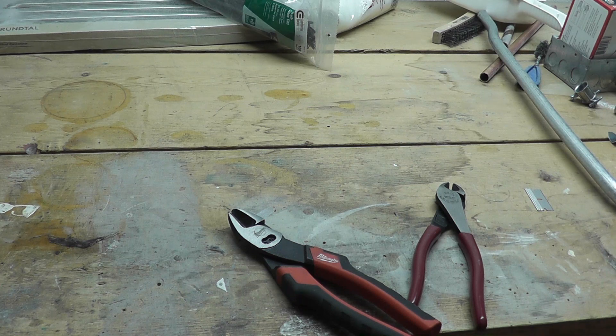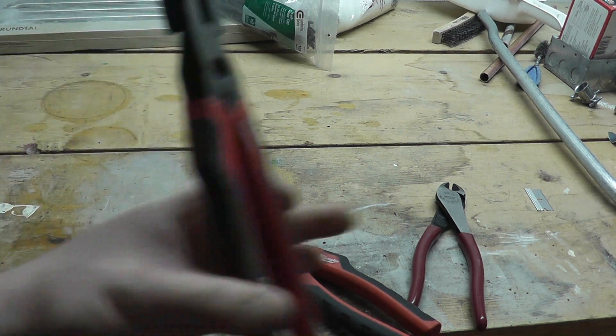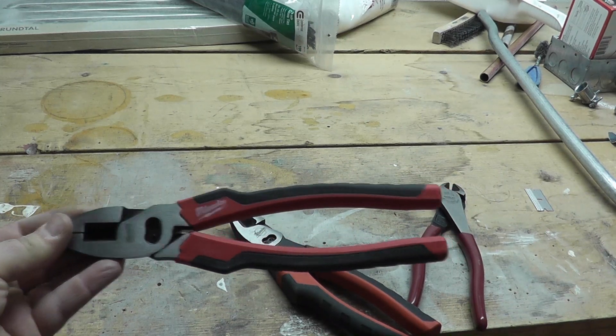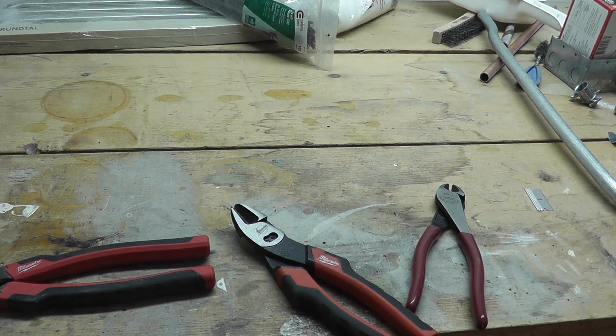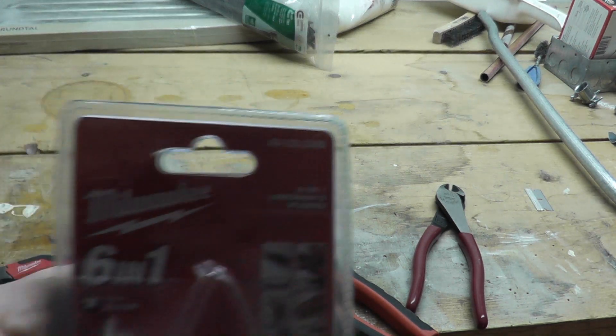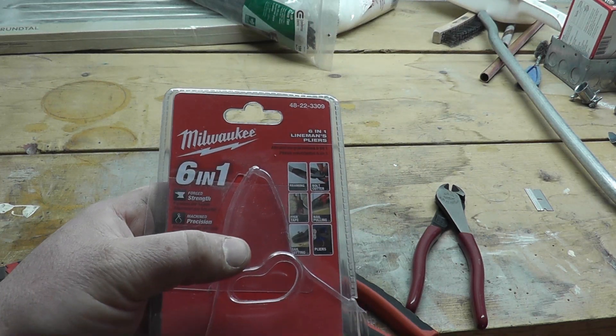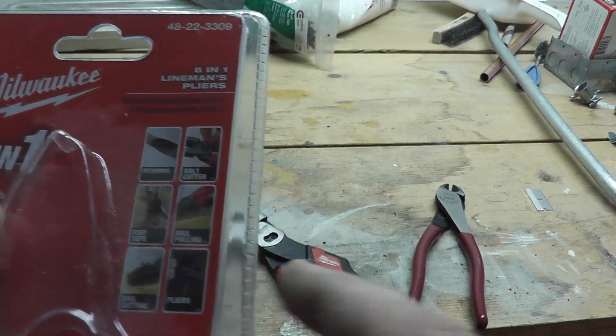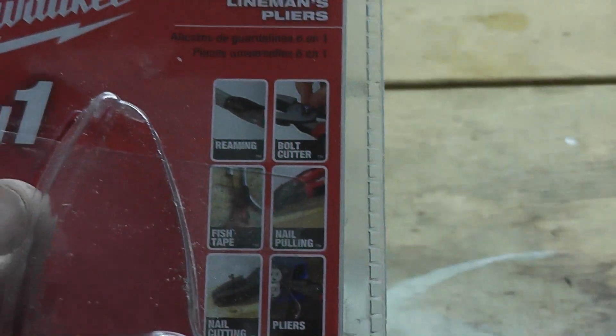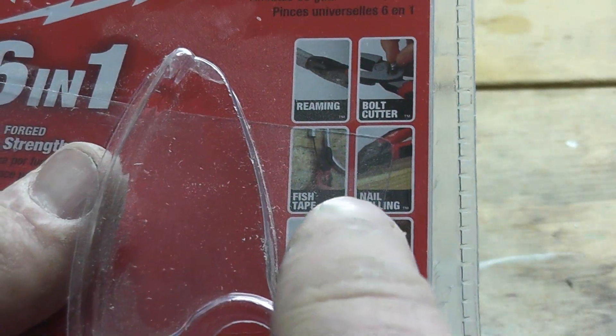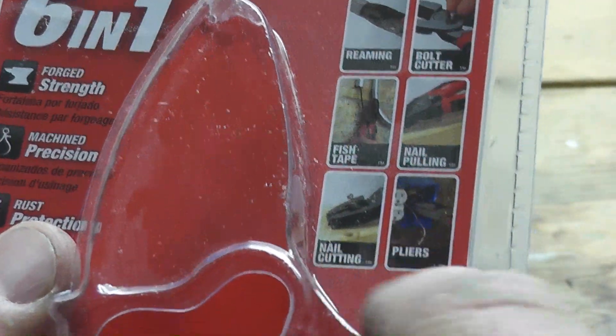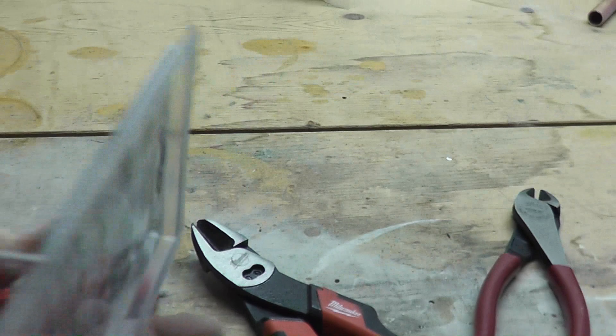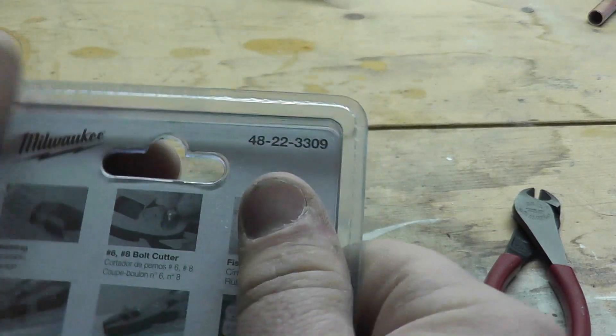On the other hand, I also picked up a pair of their lineman's pliers. Now these also are billed as six-in-one. Can you see a pattern forming here? These are pretty much the same thing here - reaming, bolt cutter, fish tape puller. I think the back might have a better picture of that. Nail pulling, nail cutting, and regular pliers. Let me see if I can find a picture of the fish tape thing.